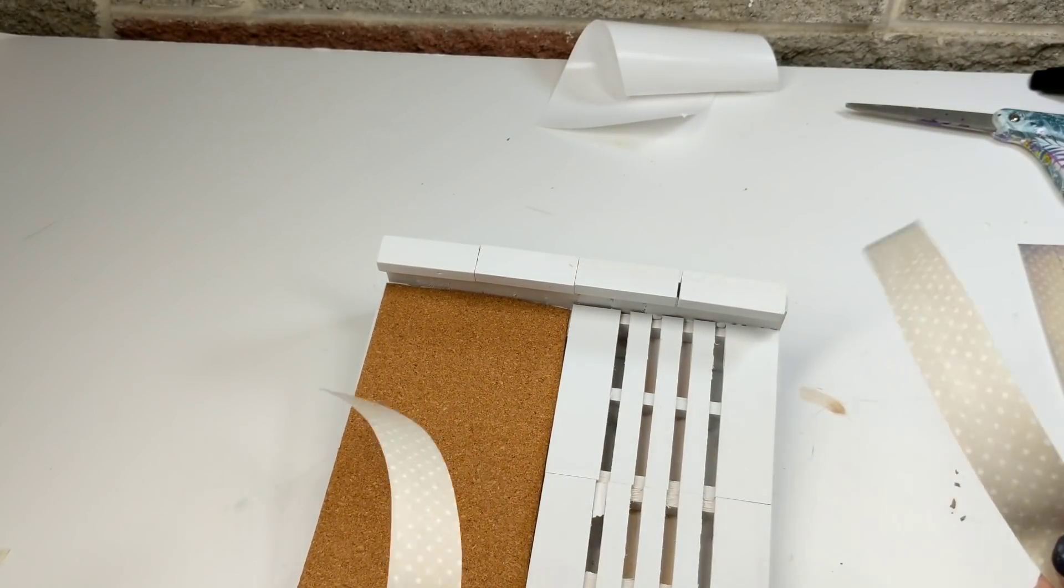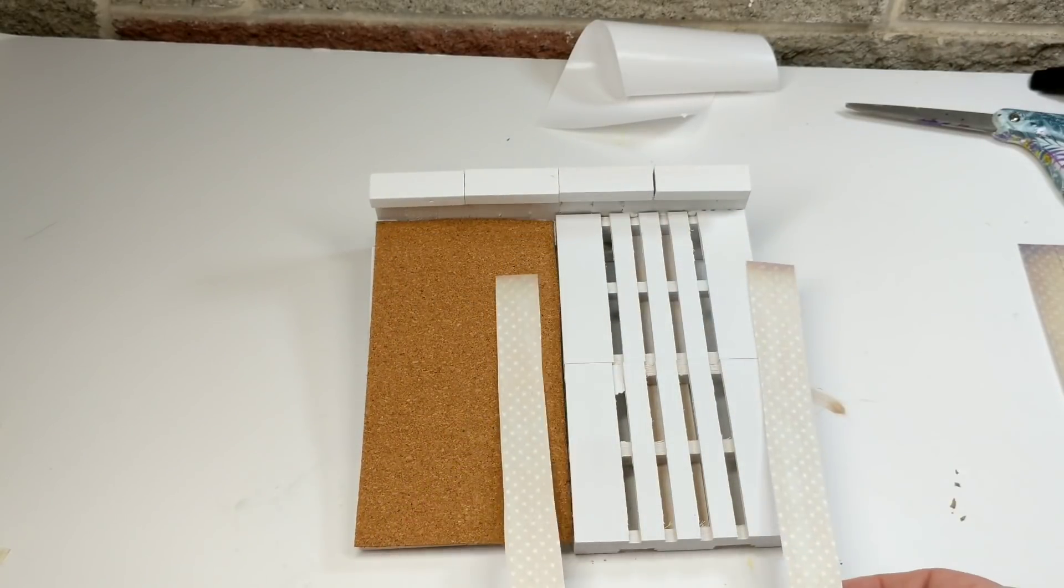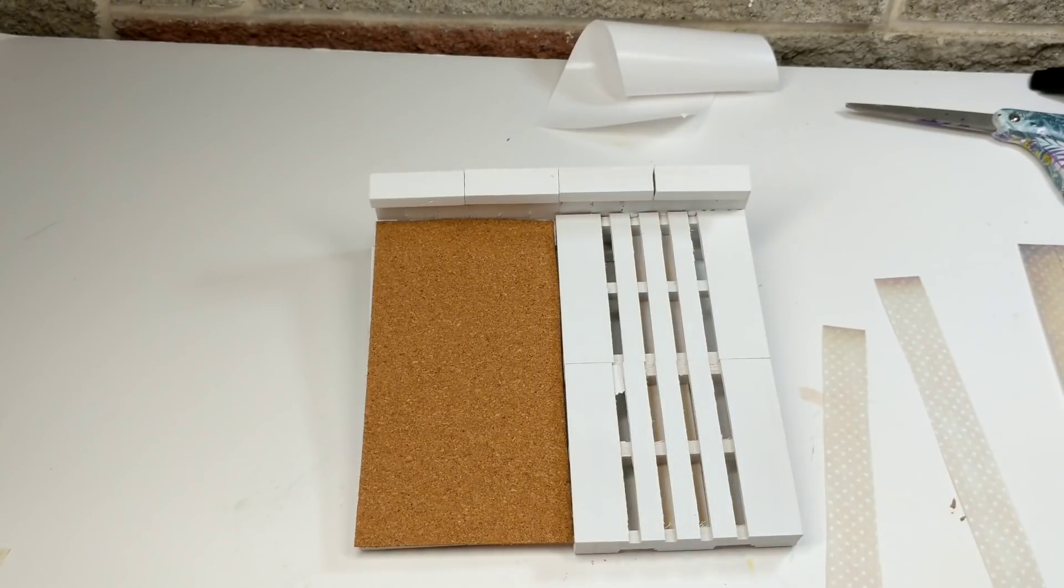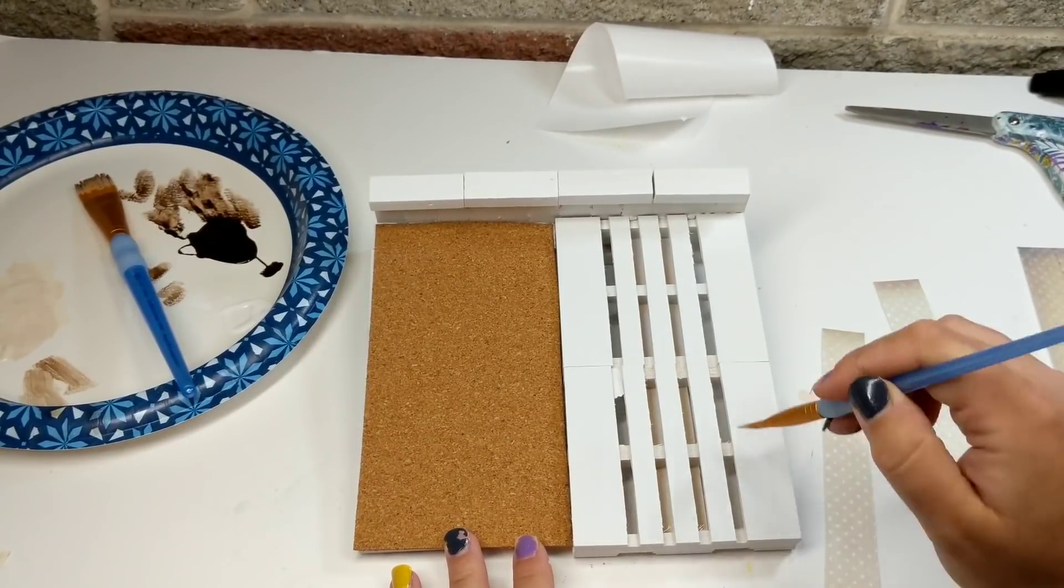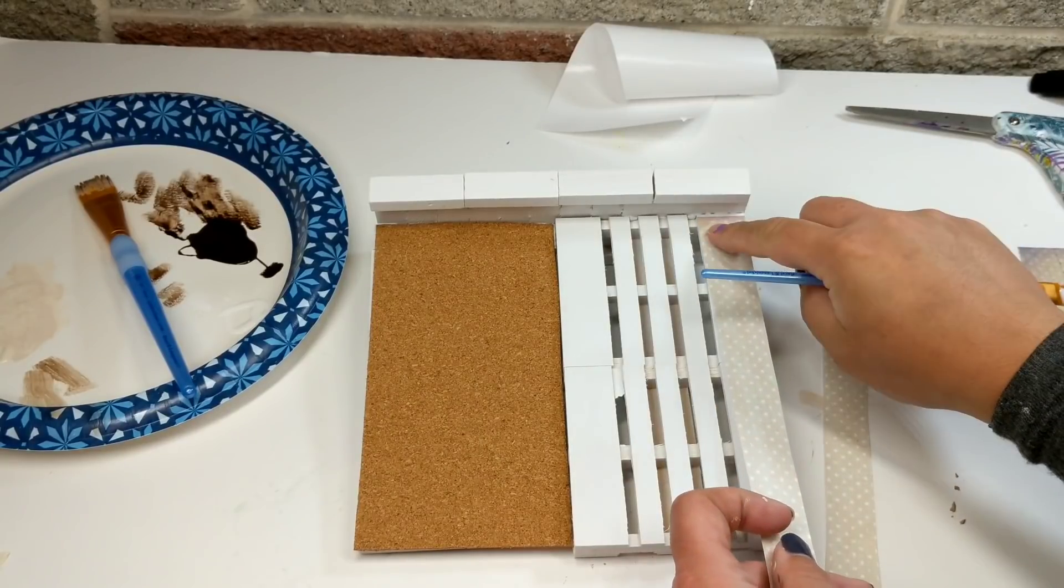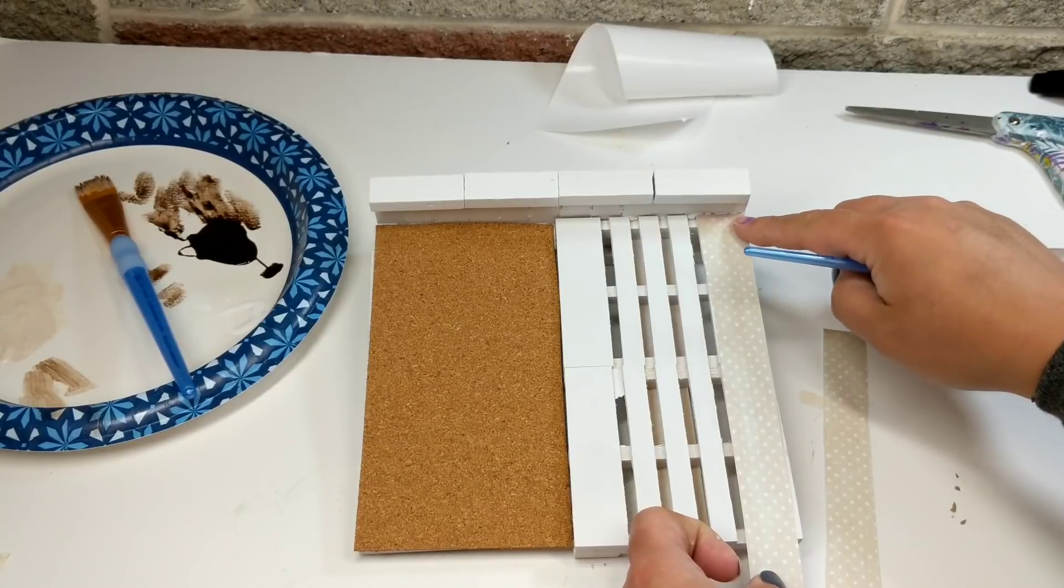And you're welcome to put a little piece of paper on the back and cover up the sticky part if you want. Then I'm just taking the same exact paper I got from Hobby Lobby, cutting it to size, and just decoupaging it on each side of the larger pieces of the palette for some decoration. And again, so it all matches. I'm going for a matching theme.